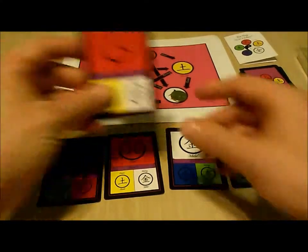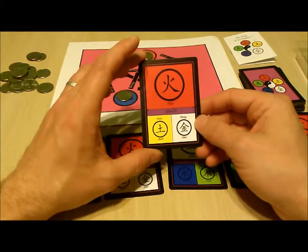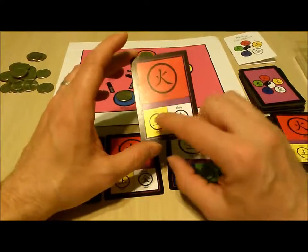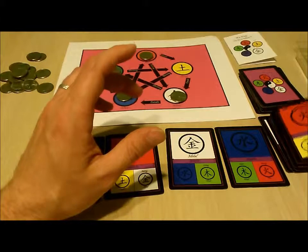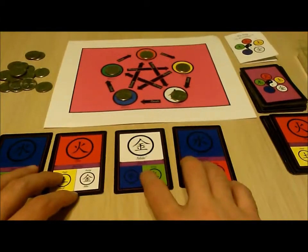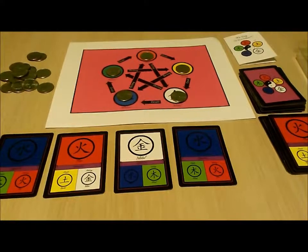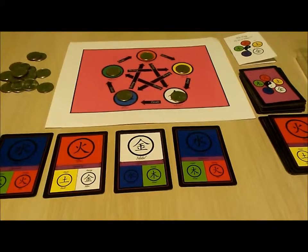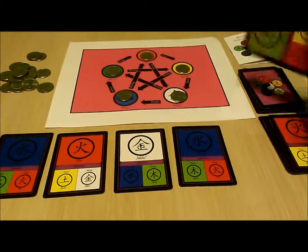And we'll play a fire card but this time we'll spend a fire token to create an earth token. So the universe is balanced but our hand is not. We will therefore choose to draw a new card.